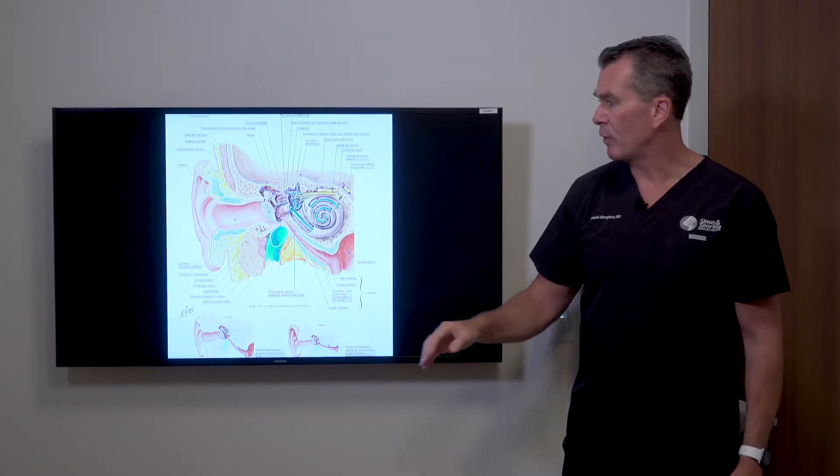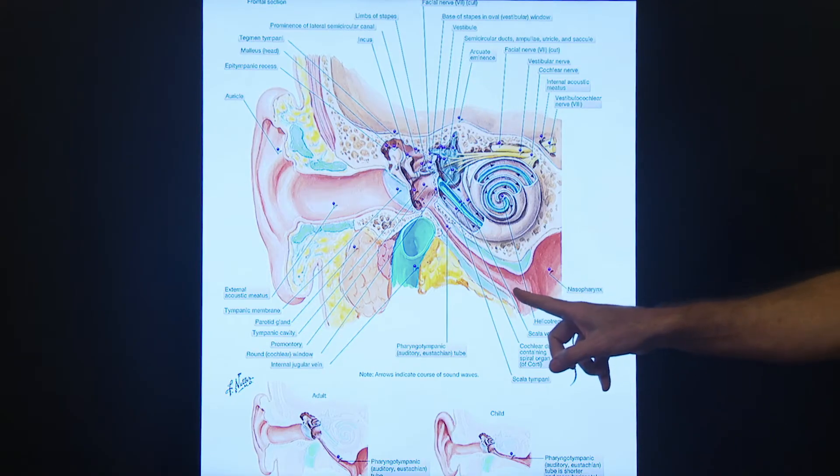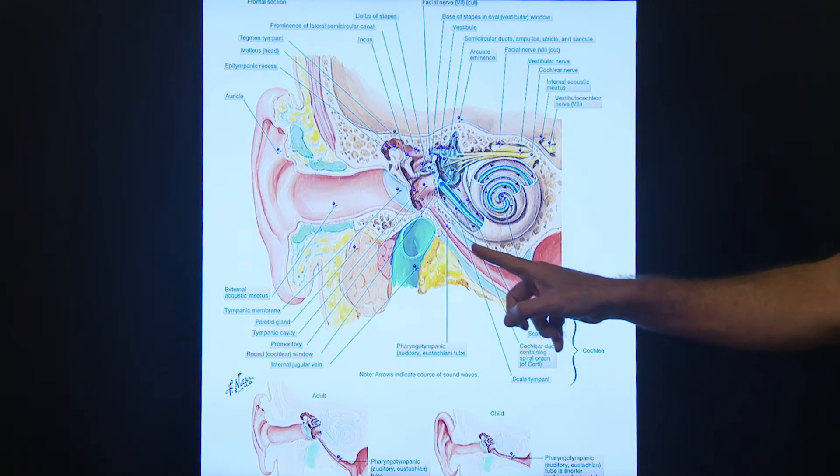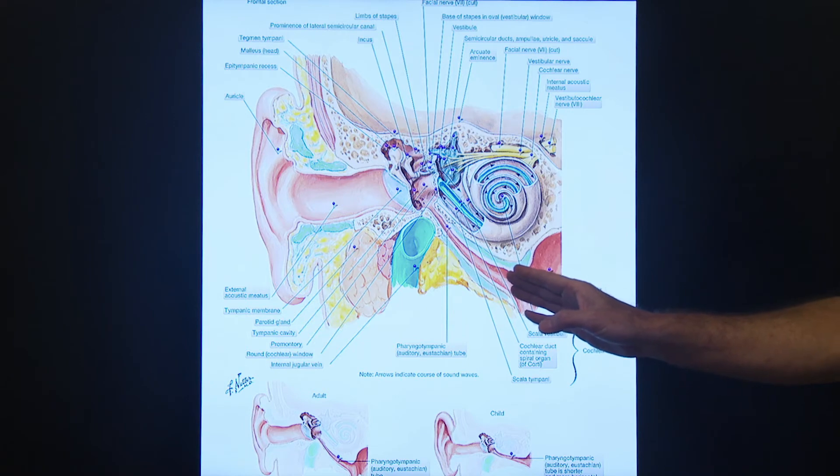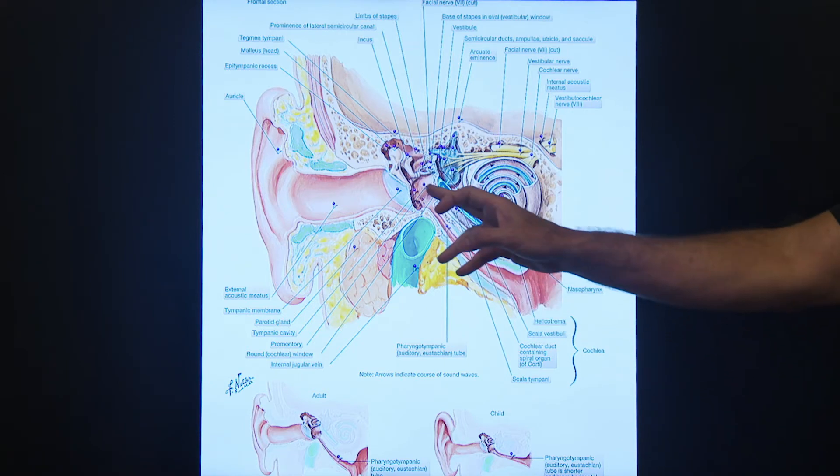That condition that produces that is referred to as eustachian tube dysfunction. The eustachian tube is a tube that leads from the nose, the back of the nose, up to the middle ear cavity, and its purpose is pretty simple. It's there to equilibrate and ventilate the middle ear cavity.